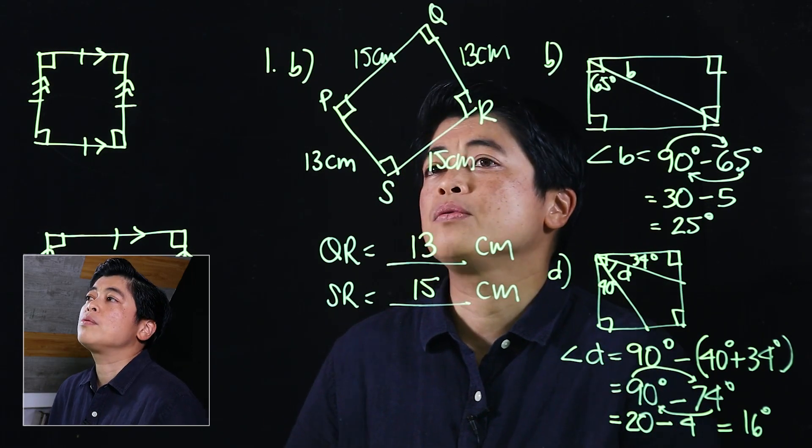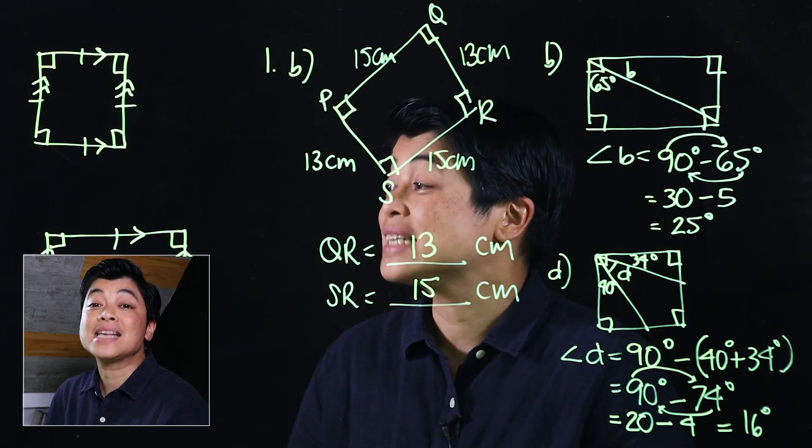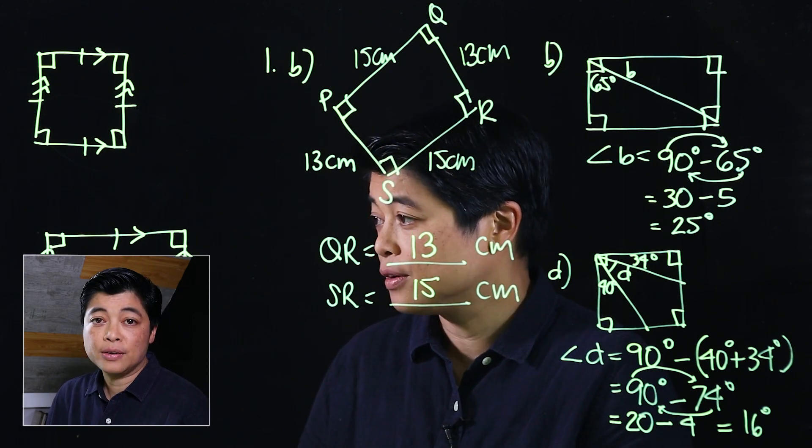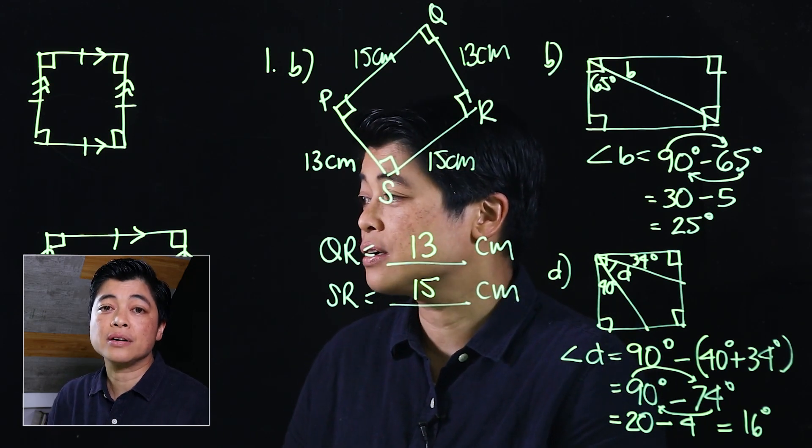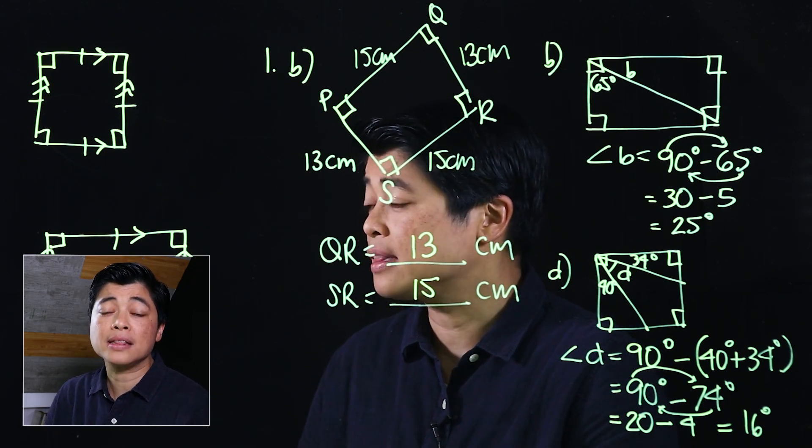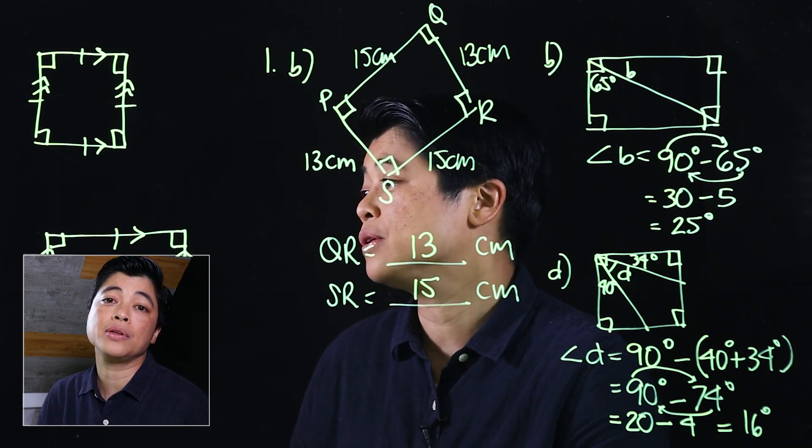When we're looking at a rectangle or a square, opposite sides are equal, and all angles are 90 degrees. If an angle is split into various angles, then that means it should all add up to 90 degrees.